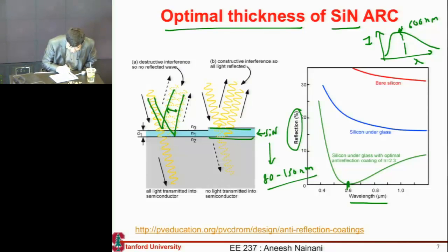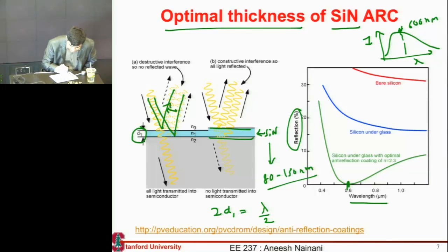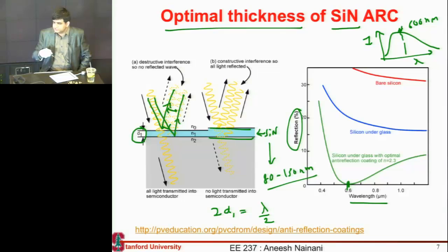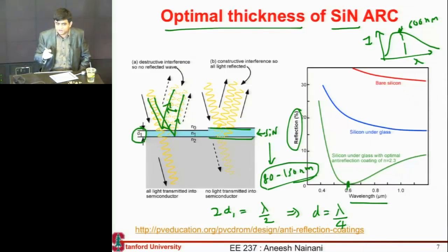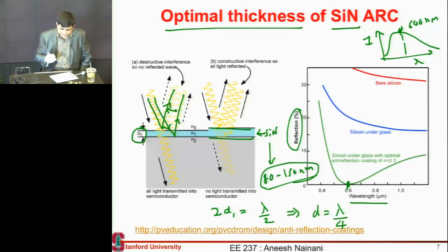For destructive interference, two times D must equal lambda over two, so the thickness D must be approximately lambda over four. That is why silicon nitride layer thicknesses are typically in the range of 80 to 150 nanometers. Store this in your memory, because very soon when we look at multi-junction cells we'll see how you need to optimize this anti-reflective coating for a multi-junction cell — and everything we have learned becomes four times more complex.